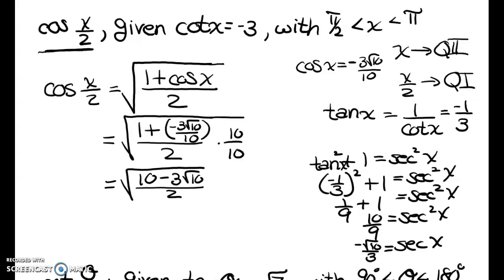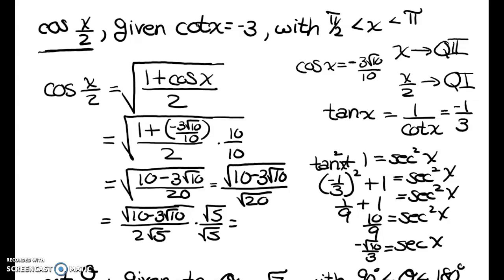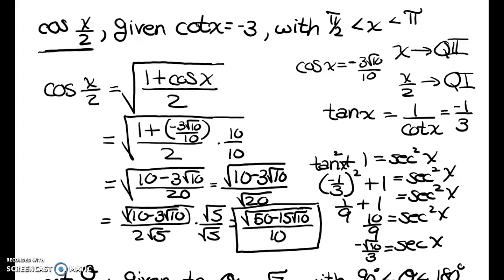I'm still not done — I need to rationalize. Splitting under the radical, radical 20 reduces to 2 radical 5. So I multiply by radical 5 over radical 5, which multiplies the whole top by 5. I end up with 50 minus 15 radical 10, all over 10. That is the final answer for cosine of x over 2.